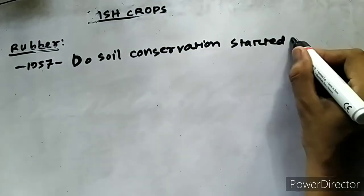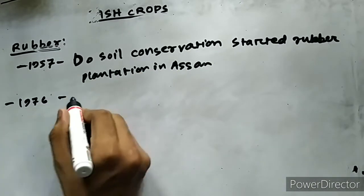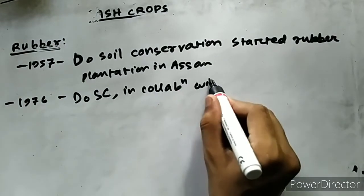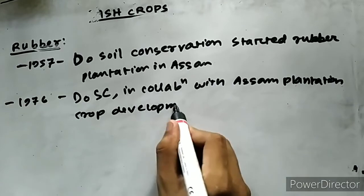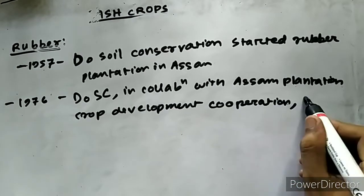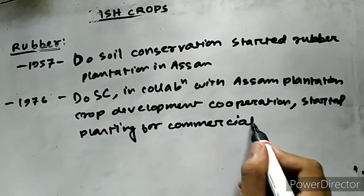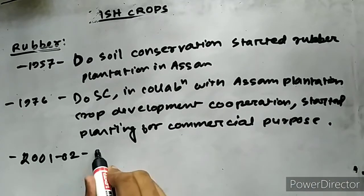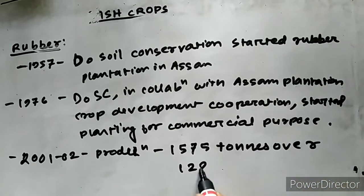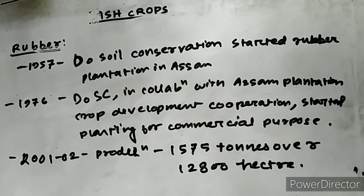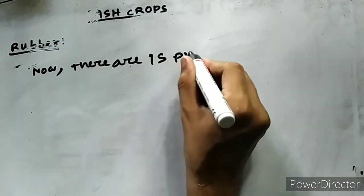Let us see the evolution of the rubber crop in Assam. In 1957, the Department of Soil Conservation, Government of Assam, started planting rubber in small patches of land on experimental basis. Then in 1976, the Soil Conservation Department of Assam in collaboration with Assam Plantation Crop Development Corporation started planting rubber for commercial purpose. In 2001-2002, Assam produced 1,757 tons of rubber over 12,800 hectares of land. There are 15 private rubber planter sectors in Assam now.